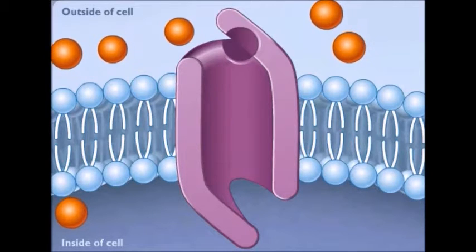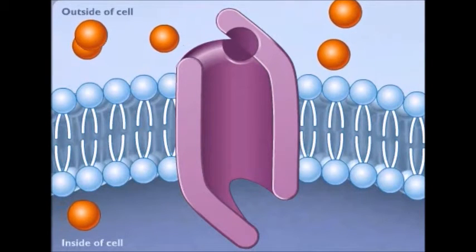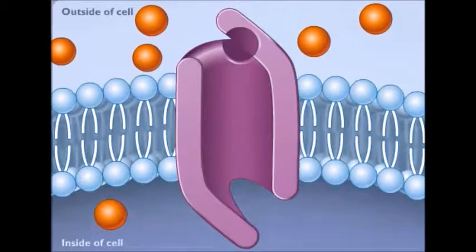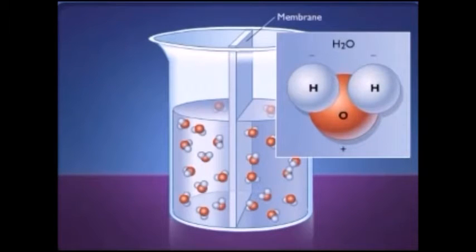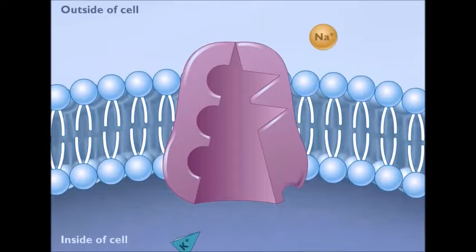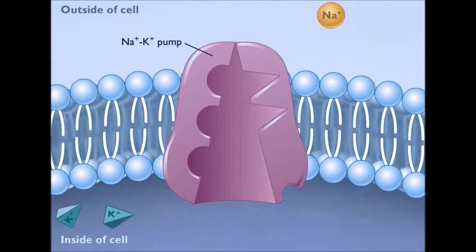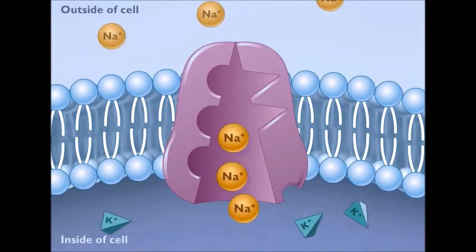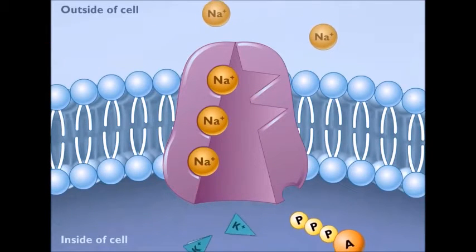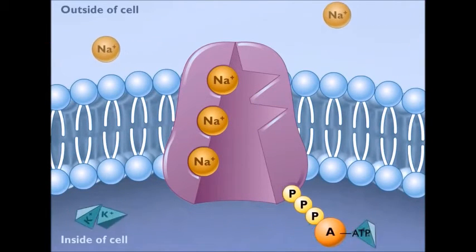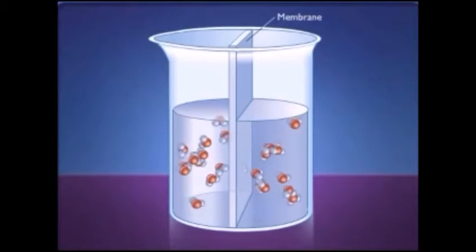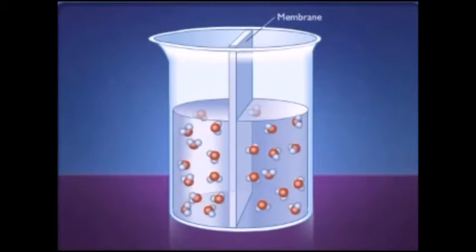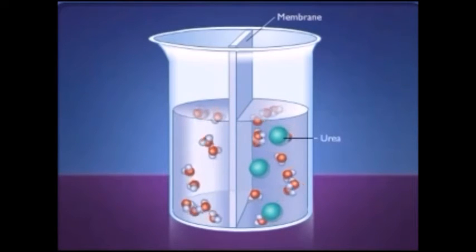There are basically two means for the movement of substances through a membrane: passively by diffusion, or actively by an energy-coupled transport process. Several different processes are known: simple diffusion through the lipid bilayer, simple diffusion through an aqueous protein-lined channel, diffusion facilitated by a protein transporter, and active transport which requires an energy-driven protein pump capable of moving substances against a concentration gradient. Diffusion is a spontaneous process in which a substance moves from a region of high concentration to a region of low concentration.